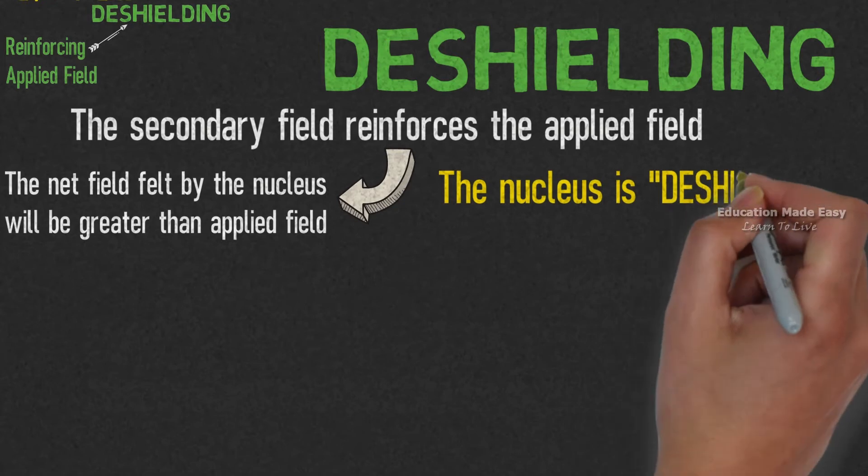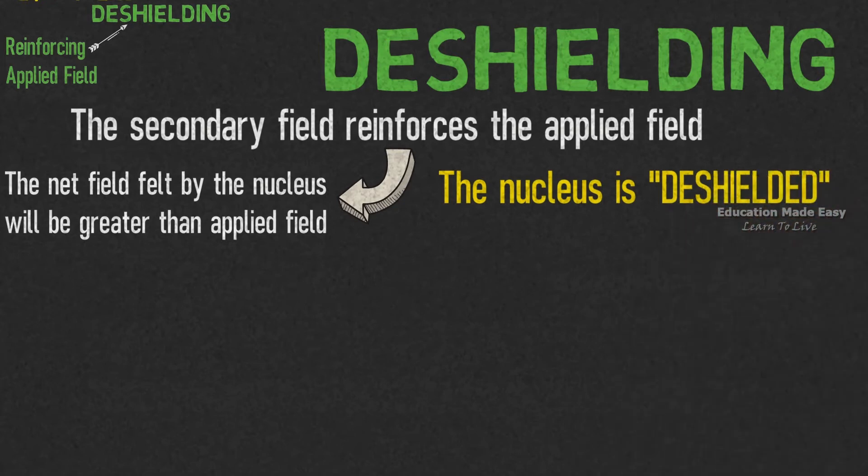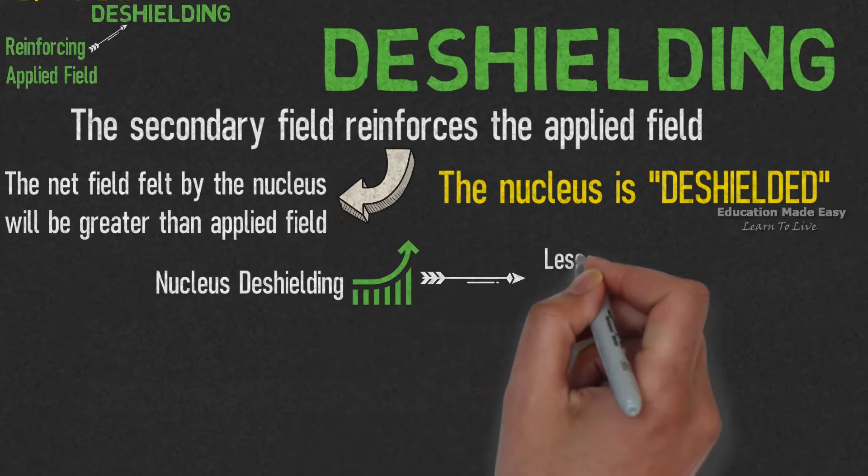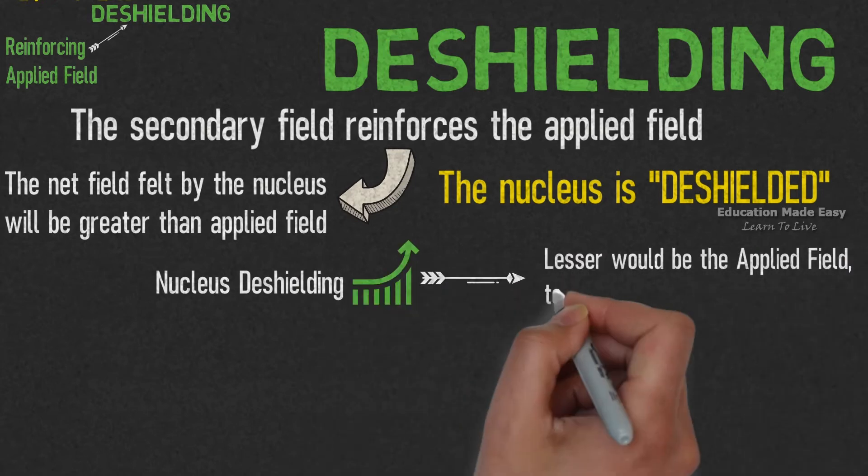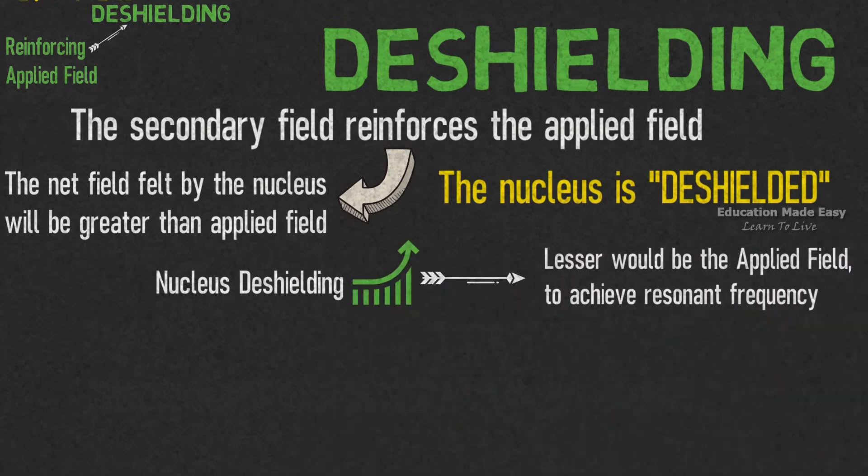Therefore, the nucleus is said to be deshielded from applied field. This indicates that as the nucleus deshielding increases, lesser would be the applied field required to achieve resonant frequency.